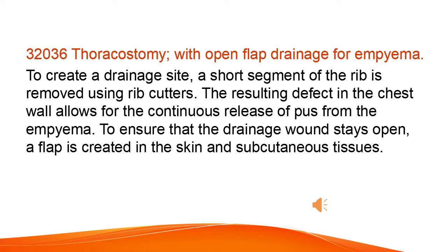Thoracostomy with open flap drainage for empyema. To create a drainage site, a short segment of the rib is removed using rib cutters. The resulting defect in the chest wall allows for the continuous release of pus from the empyema. To ensure that the drainage wound stays open, a flap is created in the skin and subcutaneous tissues.